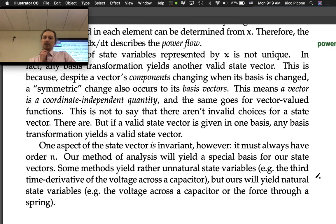Our method of analysis will yield a special basis for our state vectors. Some methods yield rather unnatural state variables - for example, the third time derivative of the voltage across a capacitor. But ours will yield natural state variables: the voltage across a capacitor, the force through a spring, or the current through an inductor. There are valid constructions for state space models, but the ones we're going to come up with will have state variables that are pretty natural quantities.